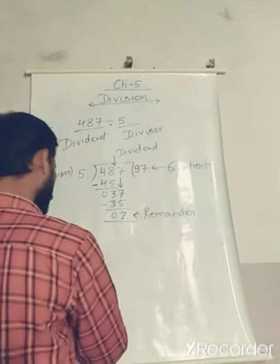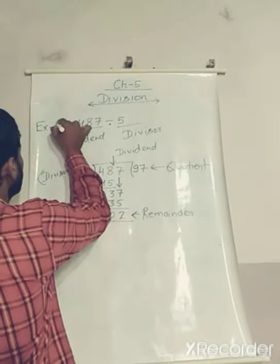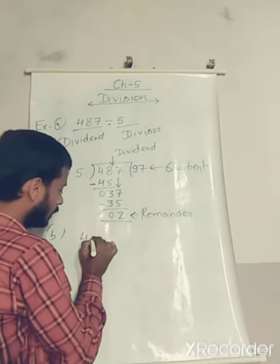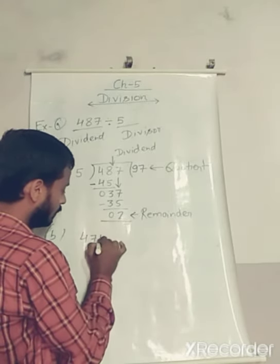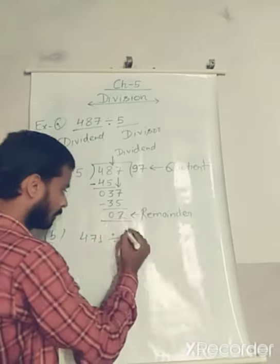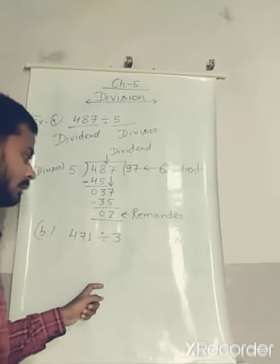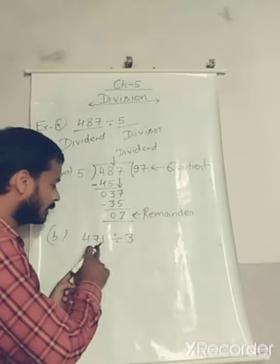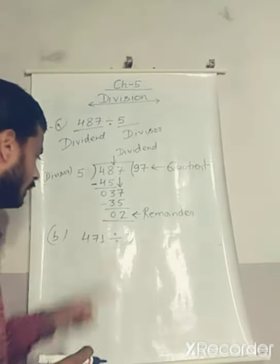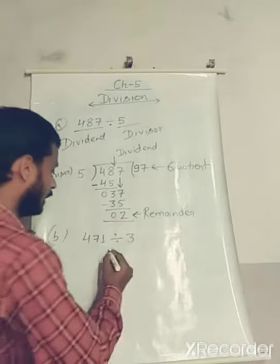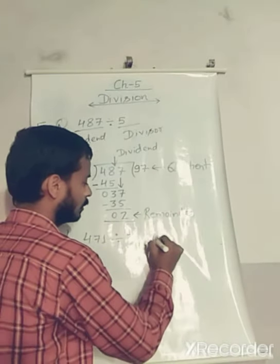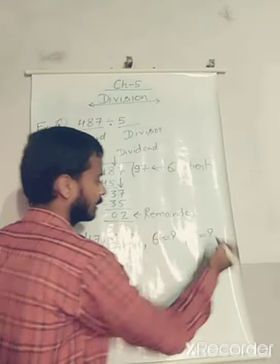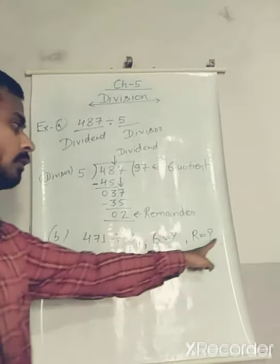Now see another example of division. Divide 471 by 3. You know that 471 is the dividend and 3 is the divisor. We need to find the quotient and the remainder.